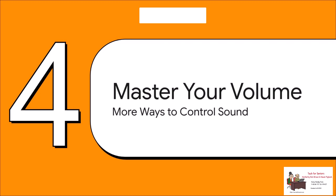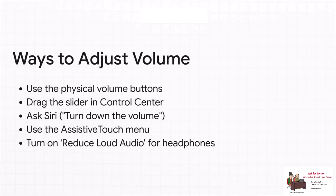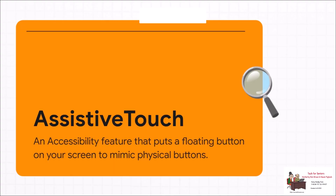We've brought back the best way to fine-tune your volume from the lock screen, but let's quickly go over a few other ways to master your iPhone's sound no matter where you are. You've got the obvious ones: the physical buttons on the side, the slider in Control Center, and of course you can just ask Siri to handle it. But there are a couple of power-user tools really worth knowing about — Assistive Touch and the headphone safety limits. Assistive Touch is an accessibility feature that puts a customizable floating button right on your screen. You can set it up to do pretty much anything, including on-screen volume controls. Honestly, it's a lifesaver if your physical buttons ever break.